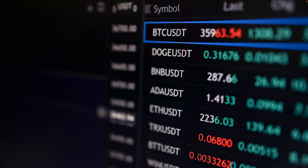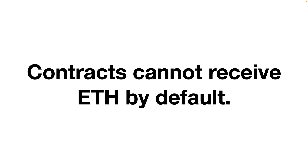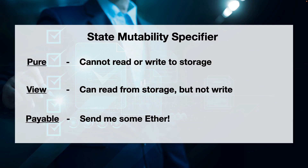In this final episode, I want to talk about how to program a contract to receive money in the form of Ethereum's native crypto, ETH. The first thing to know is that contracts on Ethereum cannot receive ETH by default. In order for a contract to receive ETH, it has to be programmed with one of a few things. The first option is to denote a function using the payable keyword.